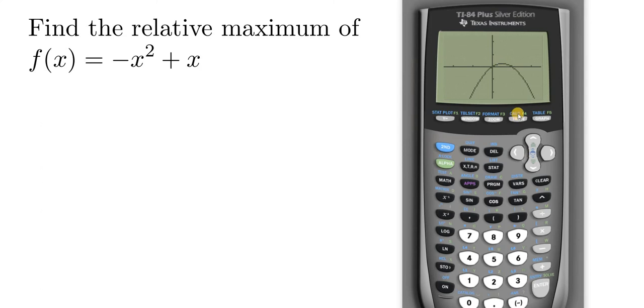So to find it, we're going to use the calc menu. So the calc menu is a blue key. So before you access a blue key, you have to hit second first. So we're going to press second, trace, and we're looking for the maximum. So we go down to maximum, and we hit enter one time.